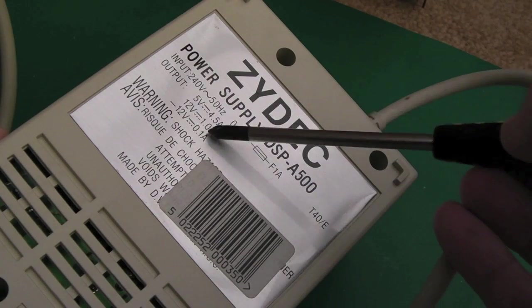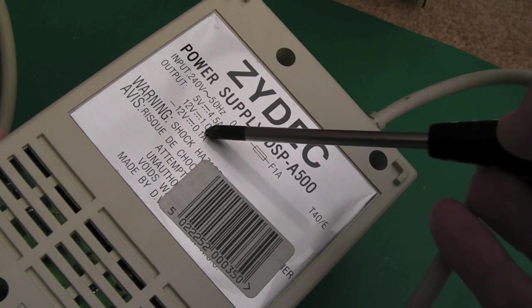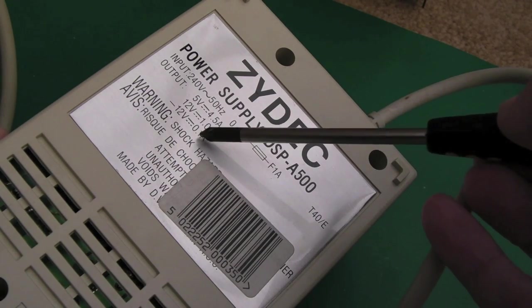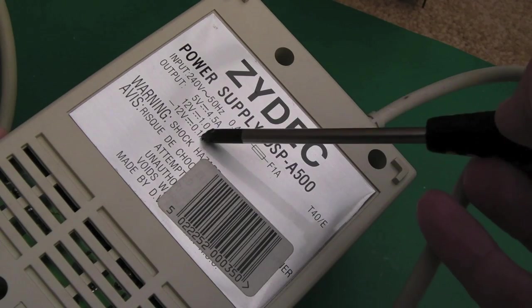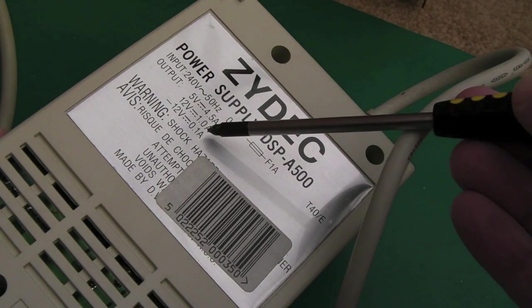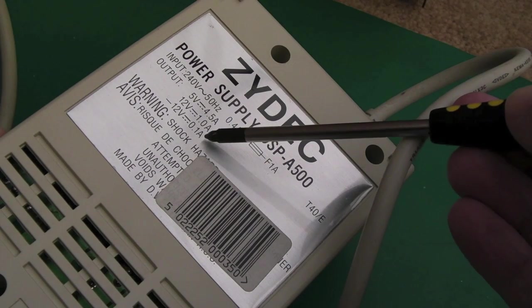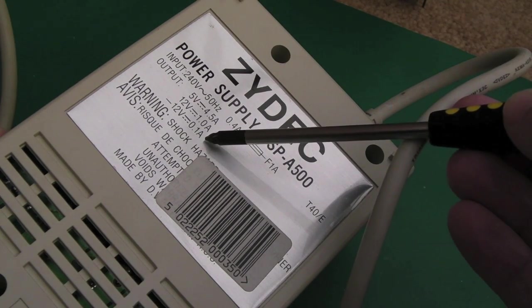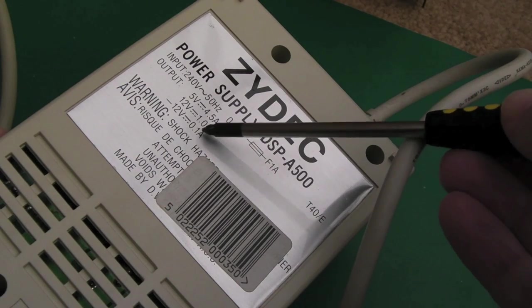12 volts at 1 amp, minus 12 at 0.1 of an amp. It's really low actually, I'm amazed how little these provide on the minus side there. I'm not sure what uses that other than the serial comms. Maybe the audio op amp needs that, I don't know if there's anything like that on here.